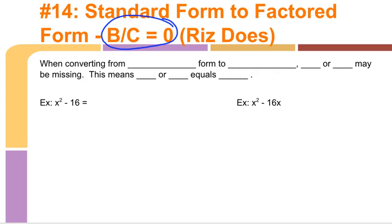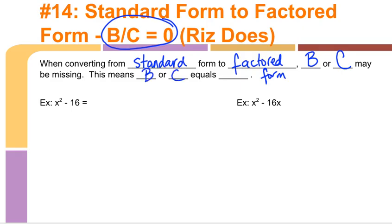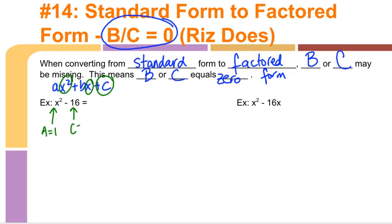When converting from standard form to factored form, B or C may be missing, meaning B or C equals 0. Remember the standard form looks like ax² + bx + c. If a term has x² that's A, so here A equals 1. The term with just a number and no variable is C, so C equals negative 16, which means B equals 0.